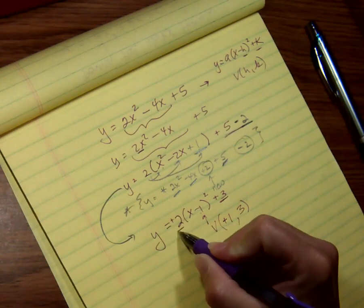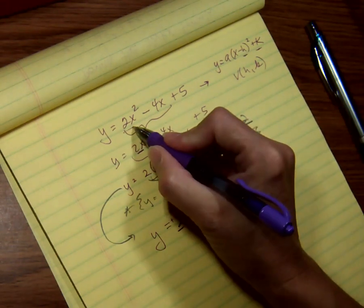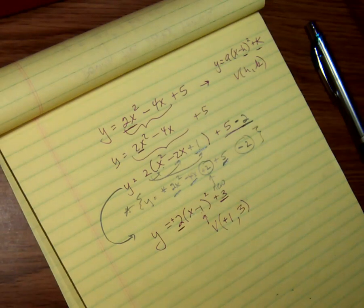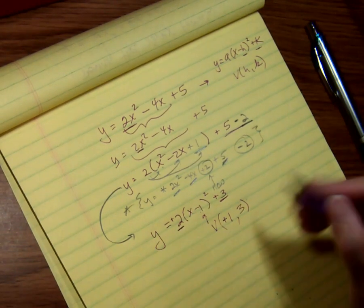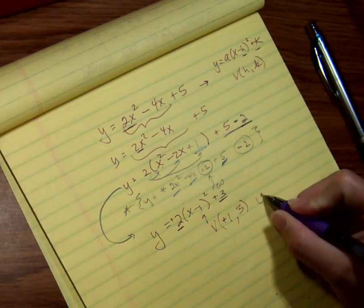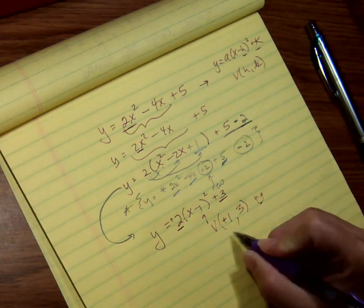And if you look at the leading coefficient, which is a 2, that's the same as the leading coefficient all the way at the beginning. Since it's positive, then this opens up, which means my vertex is a minimum.